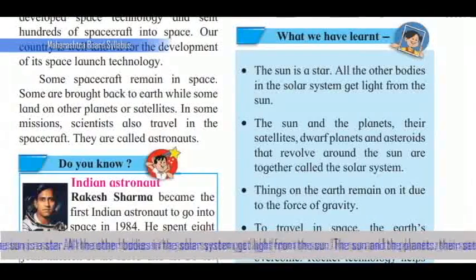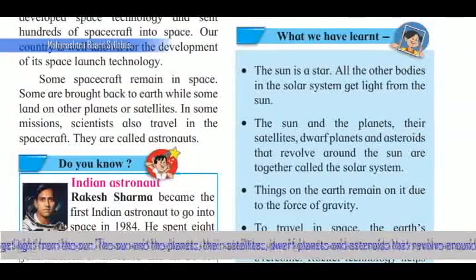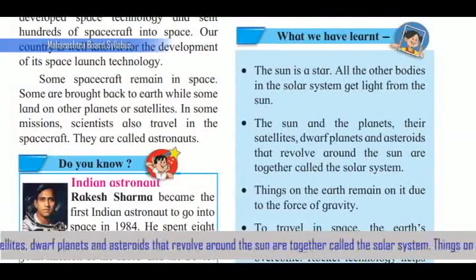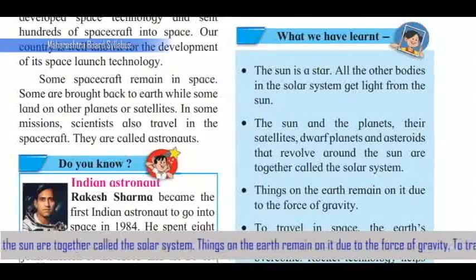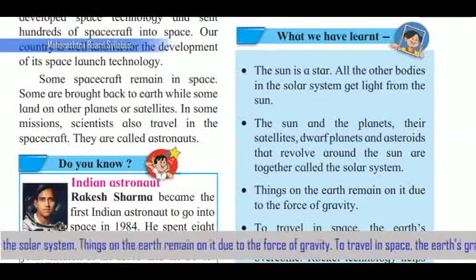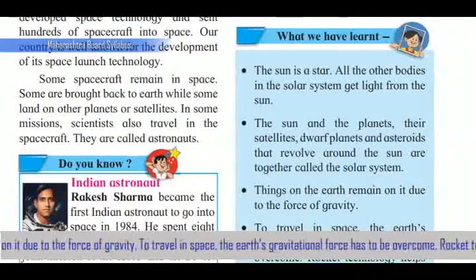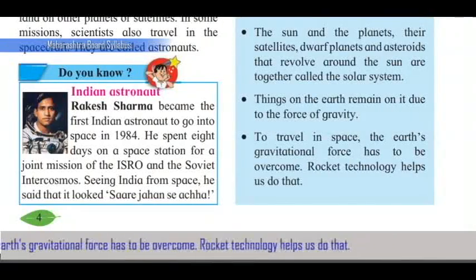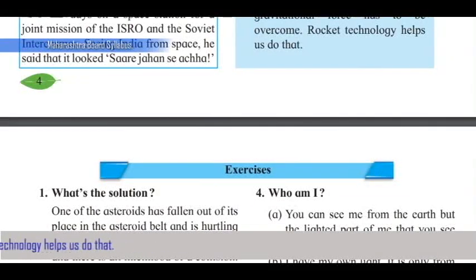What we have learnt: The Sun is a star, and all other bodies in the Solar System get light from the Sun. The Sun, the planets, their satellites, dwarf planets, and asteroids that revolve around the Sun are together called the Solar System. Things on the Earth remain on it due to the force of gravity. To travel in space, the Earth's gravitational force has to be overcome, and rocket technology helps us do that.